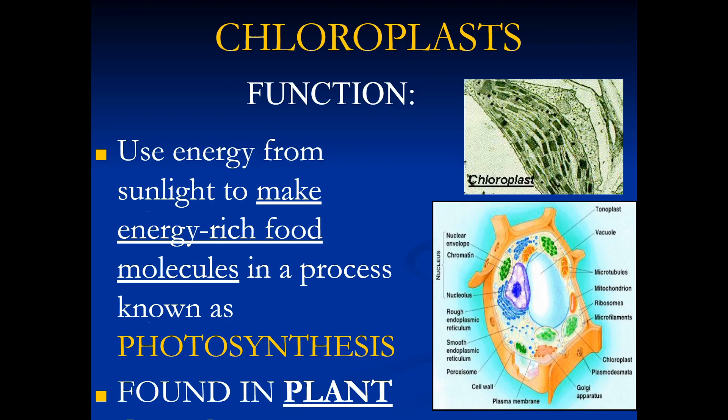Chloroplasts use energy from sunlight to make energy-rich food molecules through a process known as photosynthesis, and they are found only in plant cells.